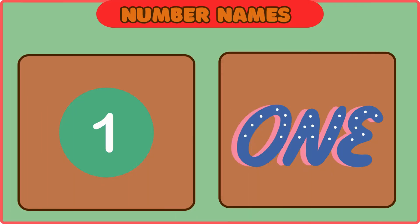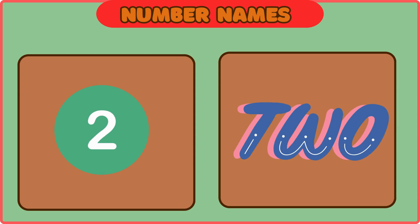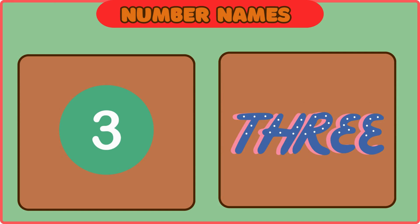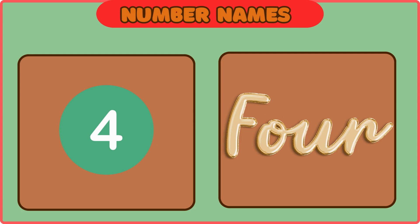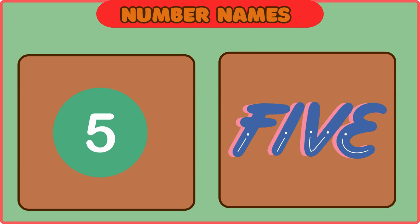O-N-E. 1. O-N-E. 1. T-W-O. 2. T-W-O. 2. T-H-R-E-E. 3. T-H-R-E-E. 3. F-O-U-R. 4. F-O-U-R. 4. F-I-V-E. 5. F-I-V-E. 5.